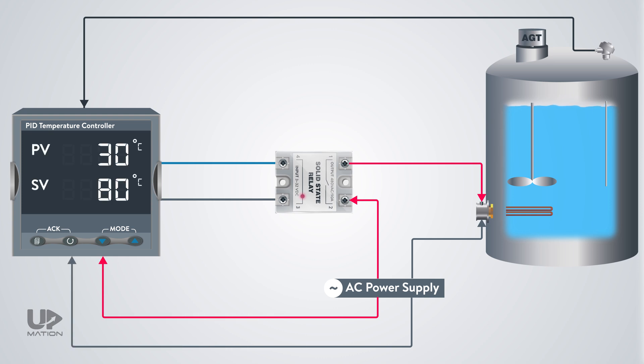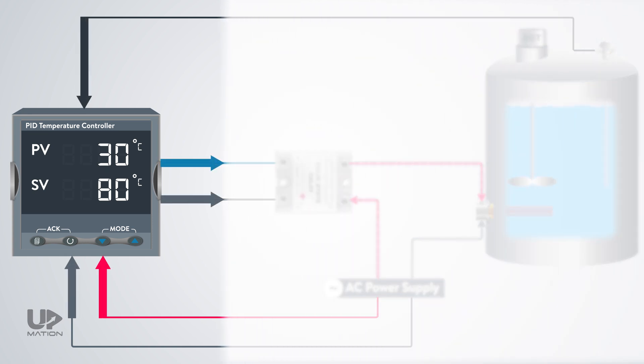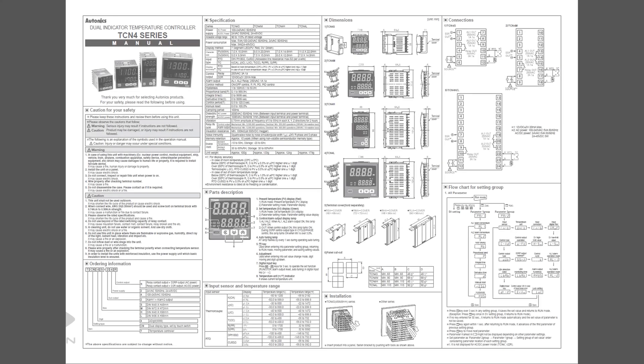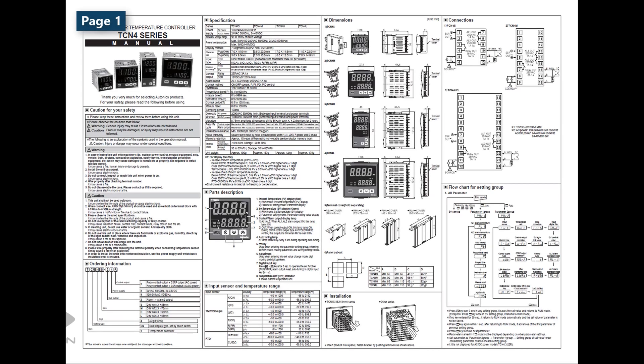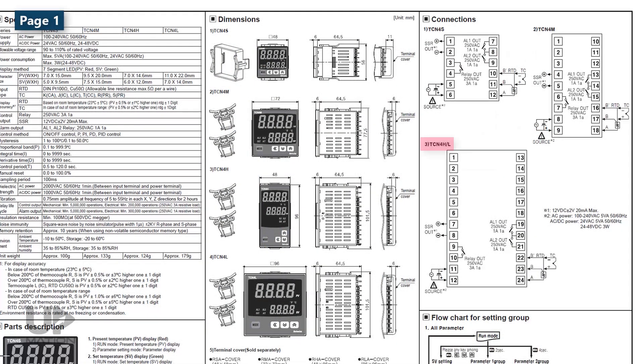For the exact wiring connection of the devices to the PID controller, we have to take a quick look at its user manual. Alright, on the first page of the manual, on the right corner, you can see the connection diagrams. Here is the model we chosen. So, we should use this connection diagram.